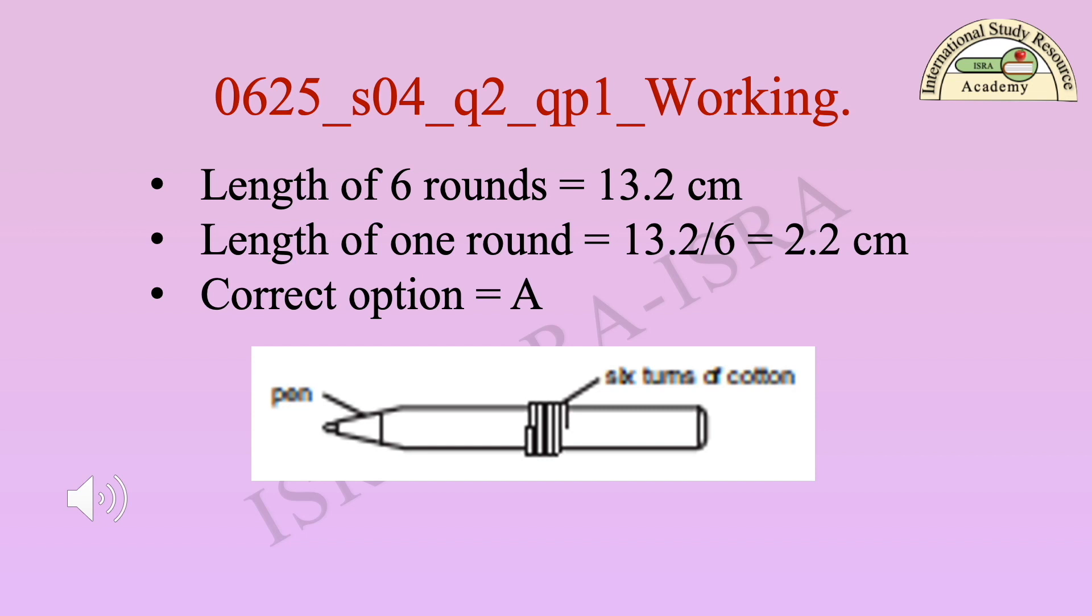Working step 4: Calculation and correct option. Length of six rounds is equal to 13.2 cm divided by 6 equals 2.2 cm. Therefore, correct option is equal to A.